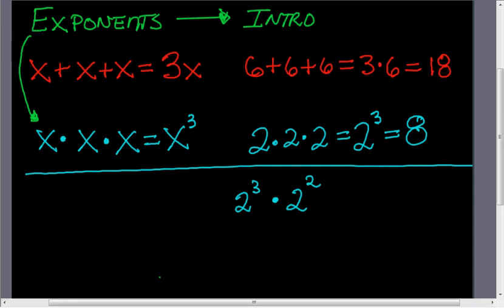Could I shorten that? Let's just think. Two to the power of three is two times two times two, and I'm going to multiply that by another two twos. Two times two. Well, how many twos are multiplying each other? One, two, three, four, five twos. This is the same as saying two multiplied by itself five times.